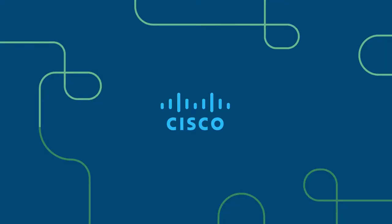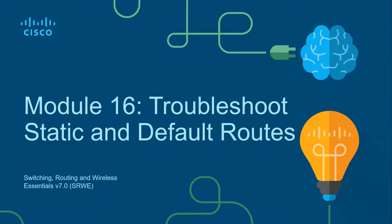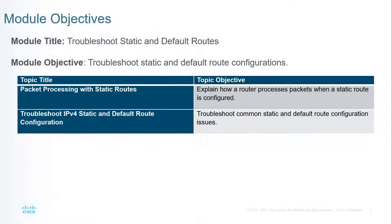Welcome to my Switching, Routing, and Wireless Essentials course — this is the CCNA version 7 curriculum, and the second of three courses. In this lecture, Module 16, we're covering two main things: packet processing with static routes, and troubleshooting IPv4 static and default route configurations.